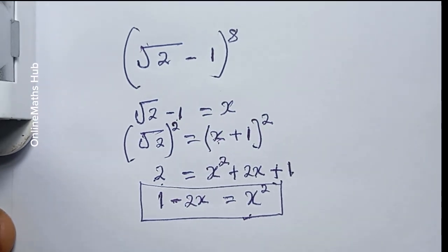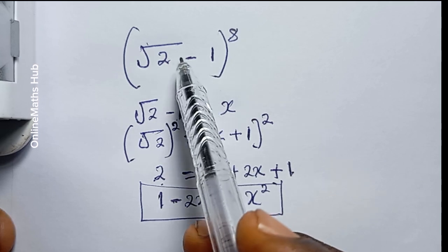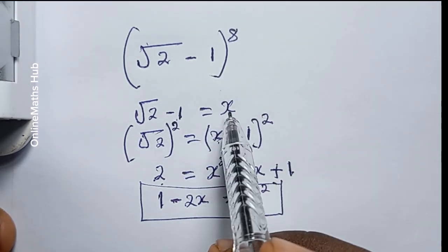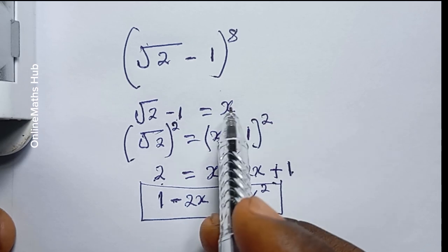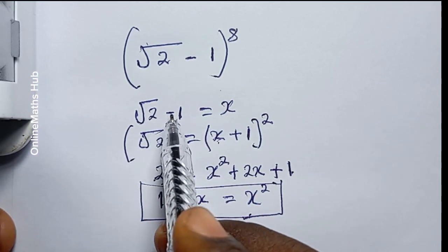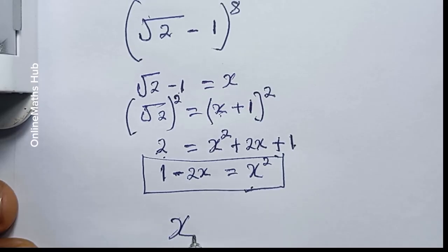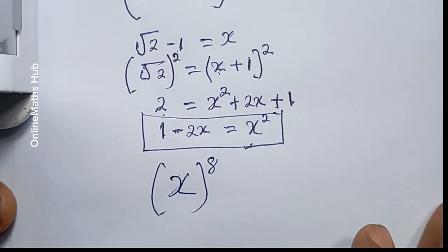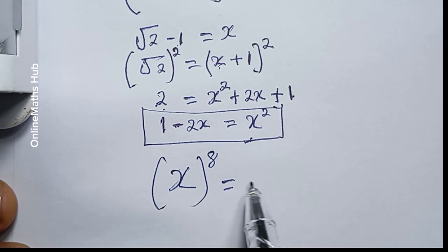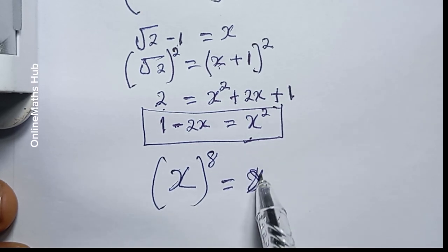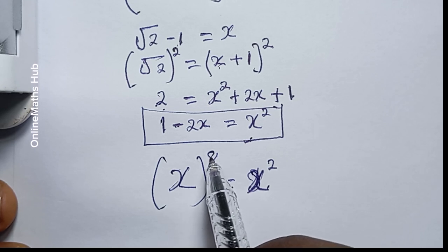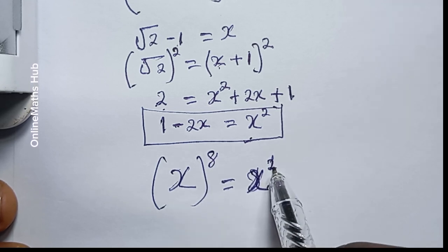Now that I've gotten x squared, I'm going to move back to the original question and in place of √2 minus 1 I'm going to put x. So my expression is now going to change to x raised to power 8, and at this point I can simplify x to the power 8 as x squared raised to some power.